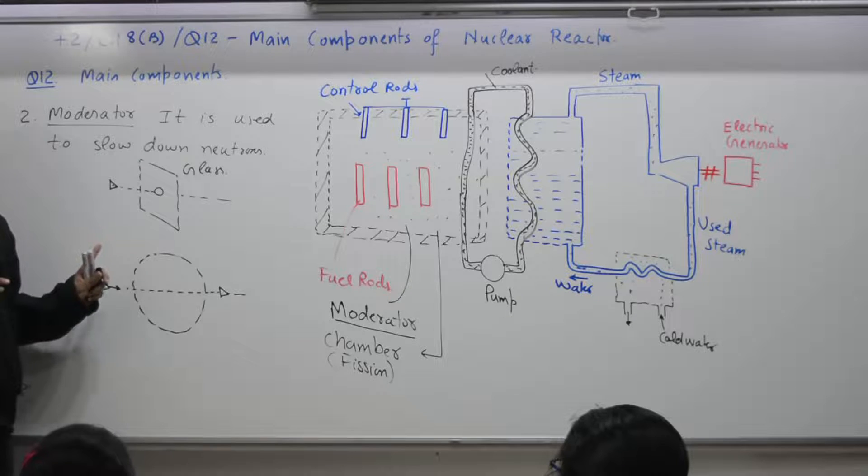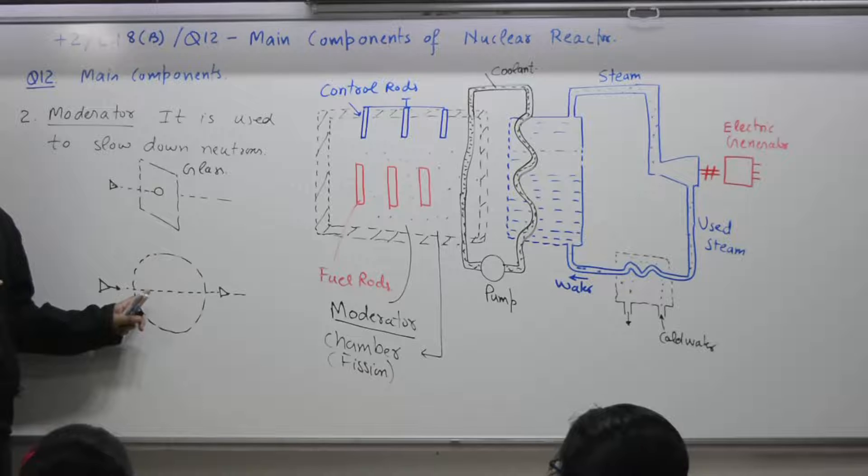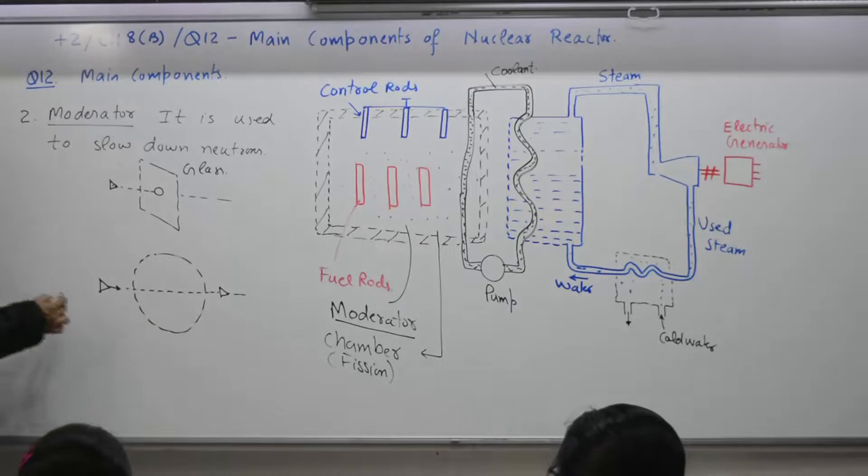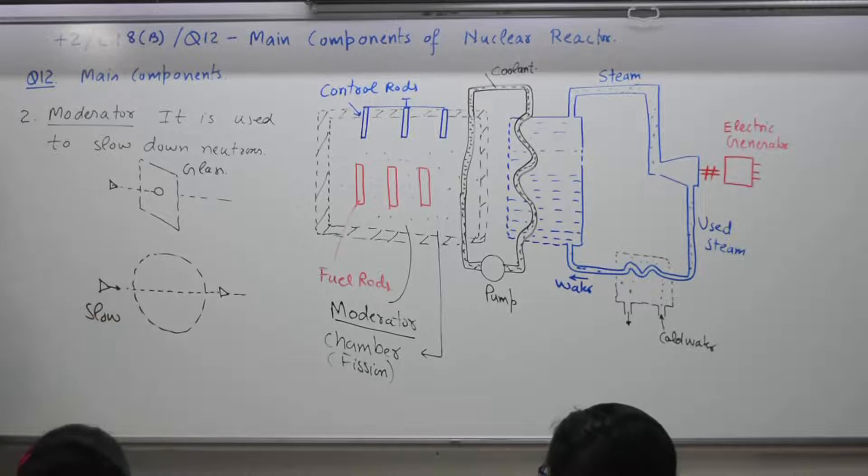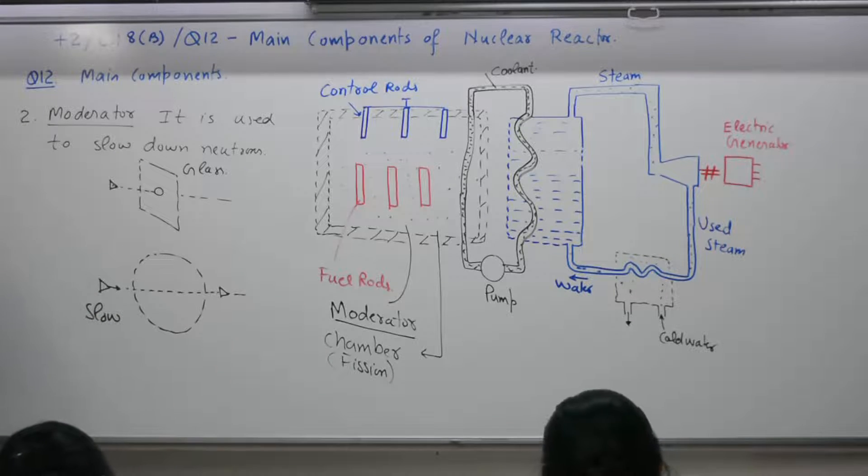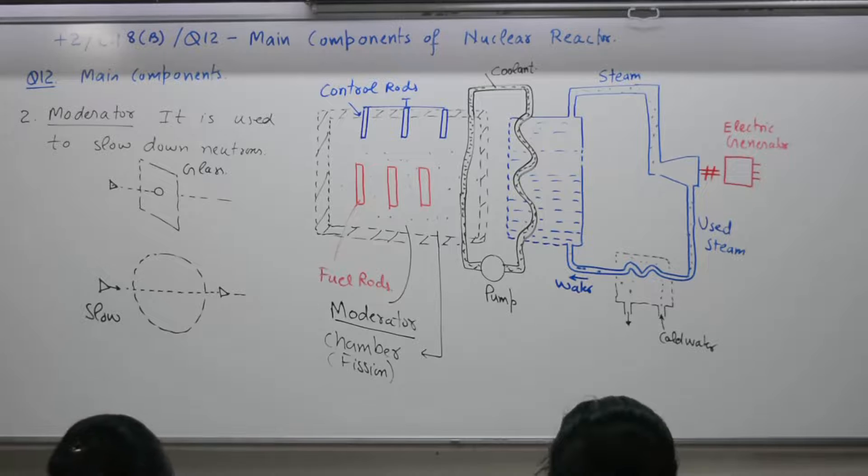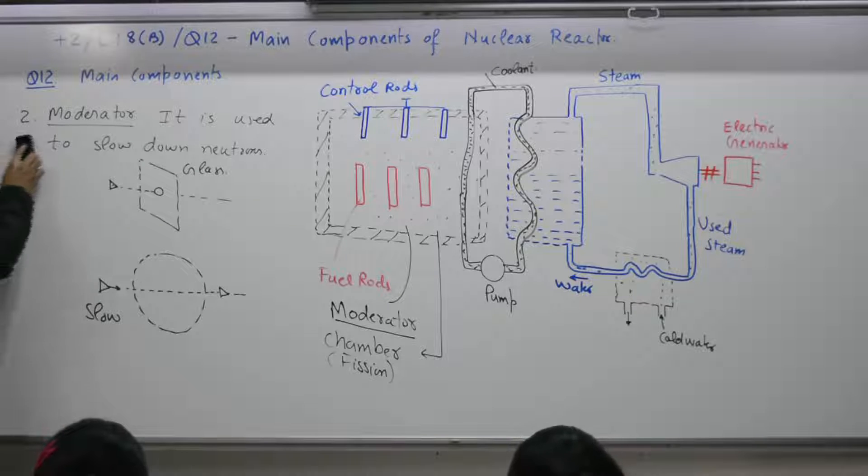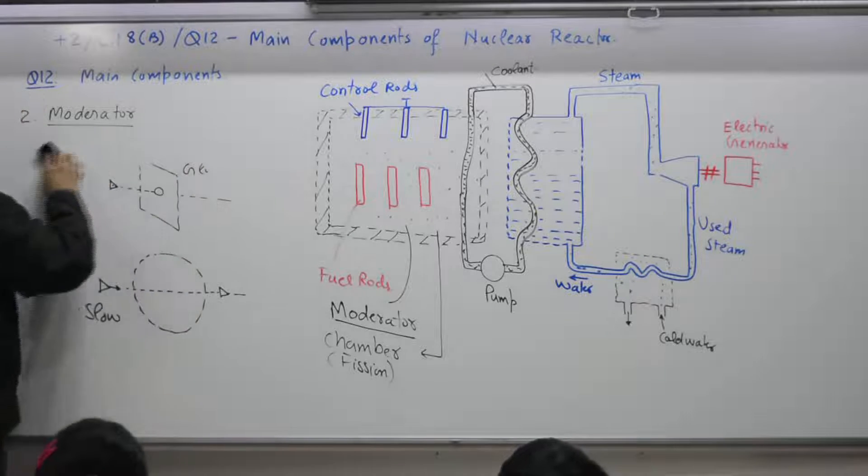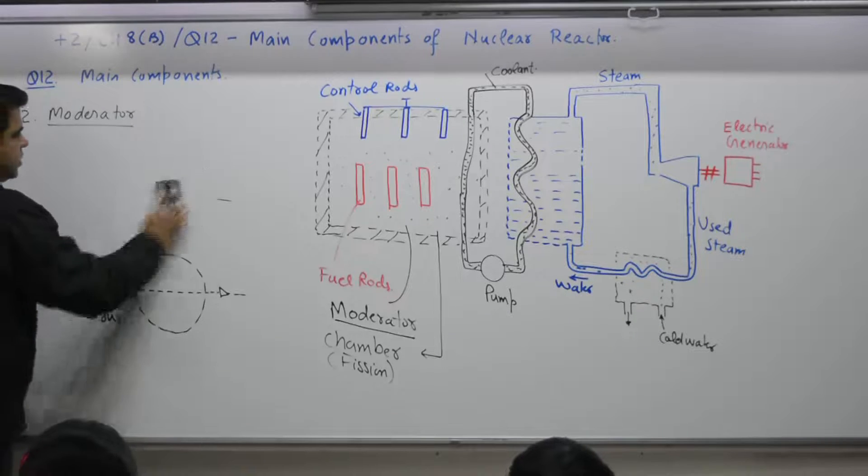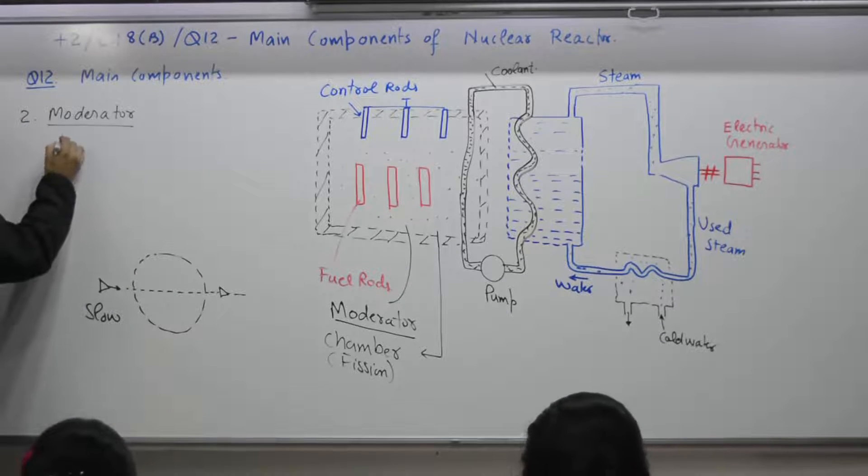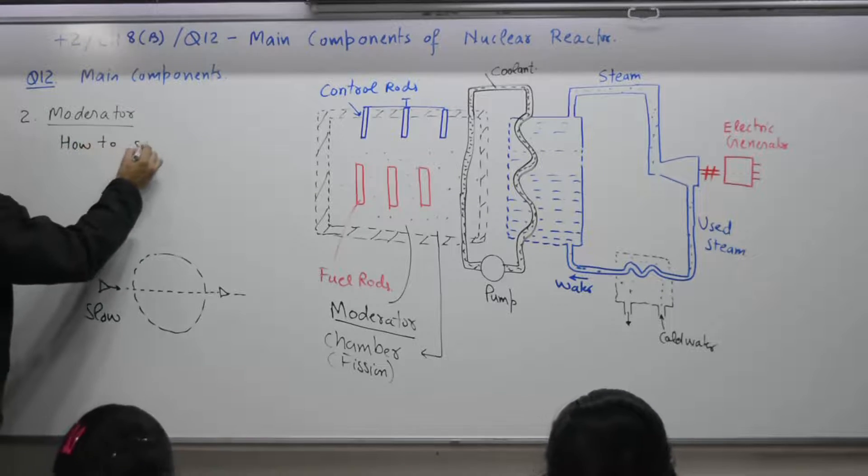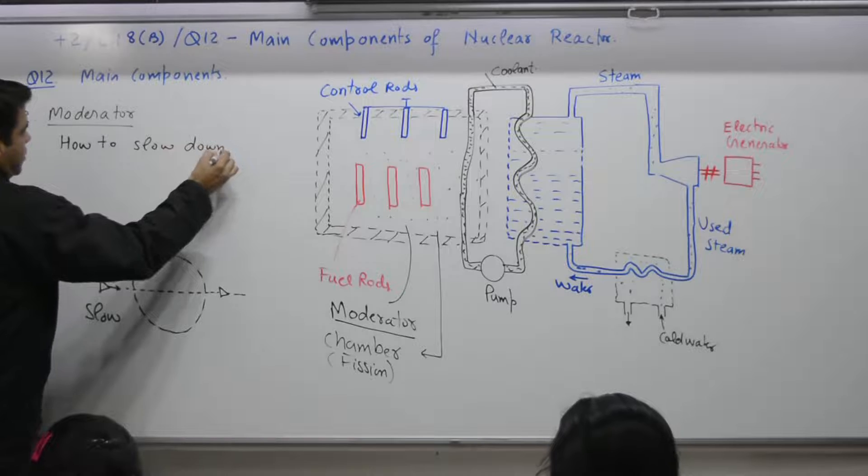So, fast moving neutrons are not useful for this reaction. So, that is why you need slow neutrons. Write down. How to slow down? How to slow down? That is the next question. How to slow down neutrons?